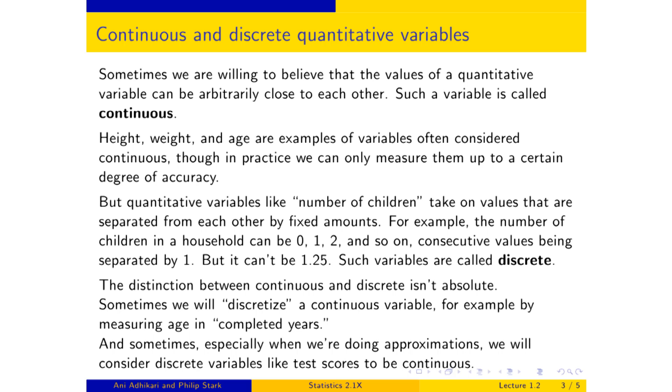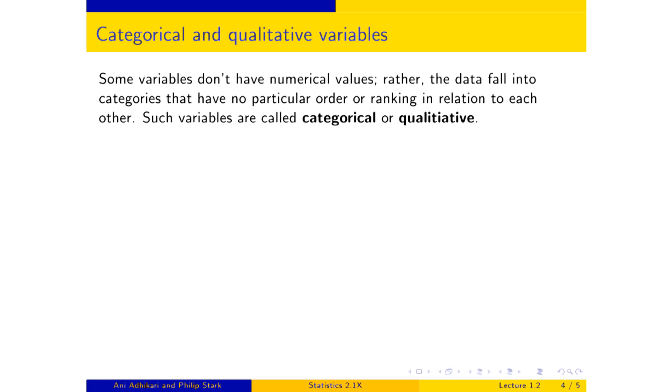Now, there are other kinds of variables. Some variables don't have numerical values at all. Rather, the data fall into categories that have no particular ranking relative to each other. These variables are called categorical, or qualitative, as opposed to quantitative.